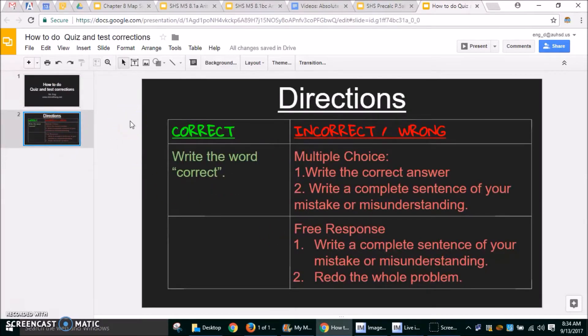So when you get back a quiz or a test, if you got full points, full credit, you just write the word correct on the right hand side. If you got the problem incorrect or wrong, for a multiple choice question, I want you to write the correct answer and then I also want you to write a complete sentence of the mistake or your misunderstanding.